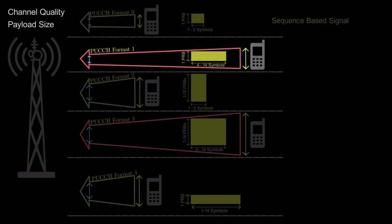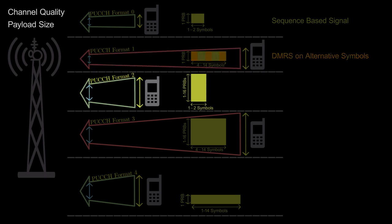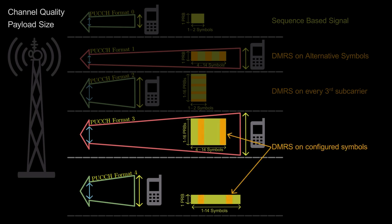PUCCH format 1 has DMRS signal on every alternative symbols. PUCCH format 2 has DMRS signal on every third subcarrier. PUCCH formats 3 and 4 have DMRS on symbols which are configurable.